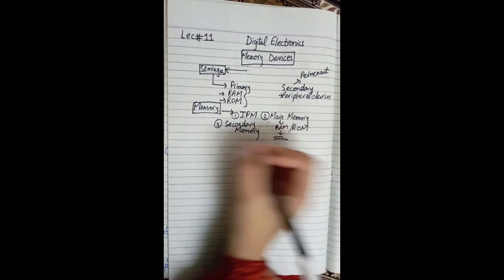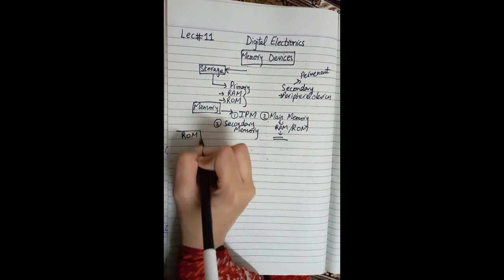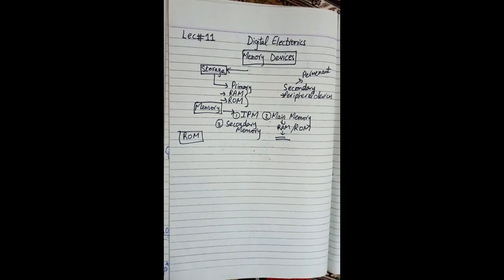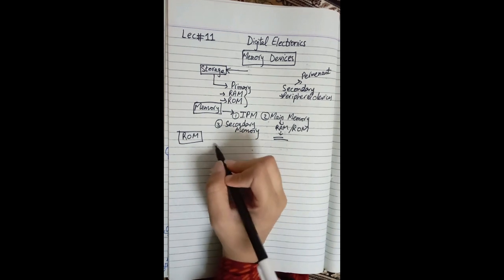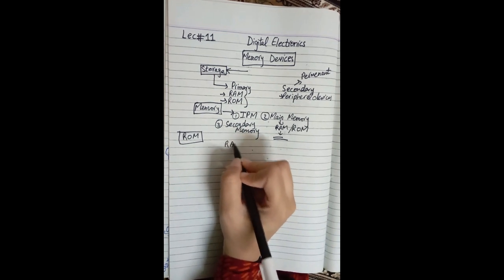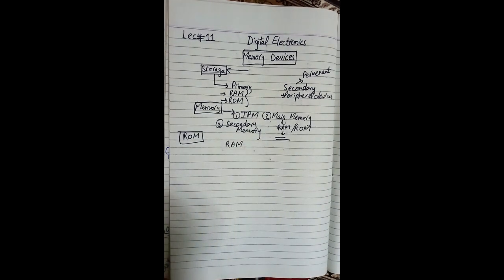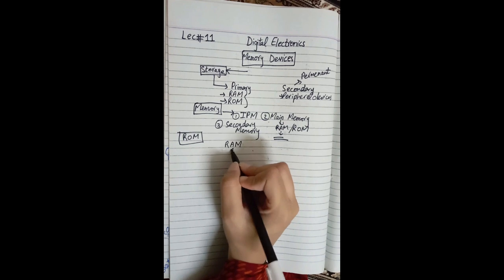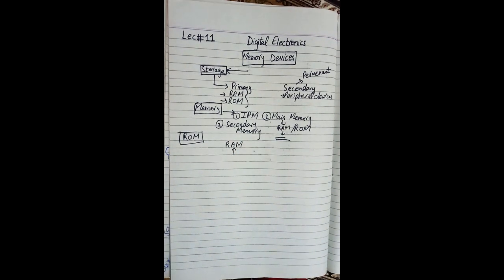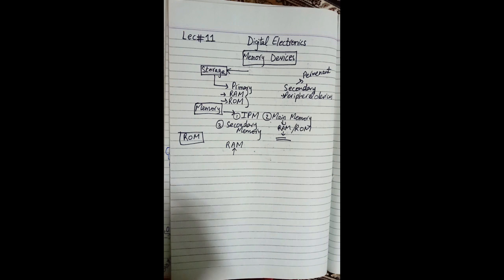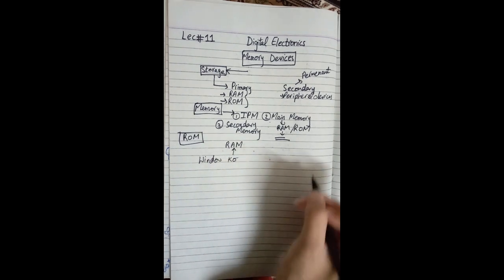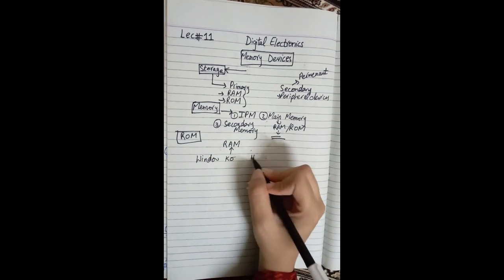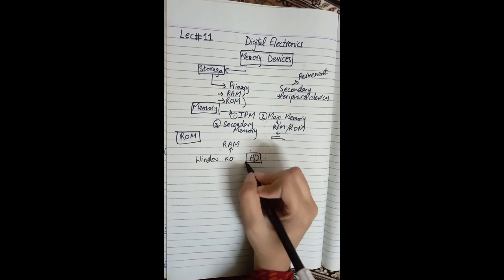Now we will see a small point about ROM. I will tell you about RAM and ROM, so this will be a small part about ROM. In RAM we have to load the ROM. The main processor processes the ROM.